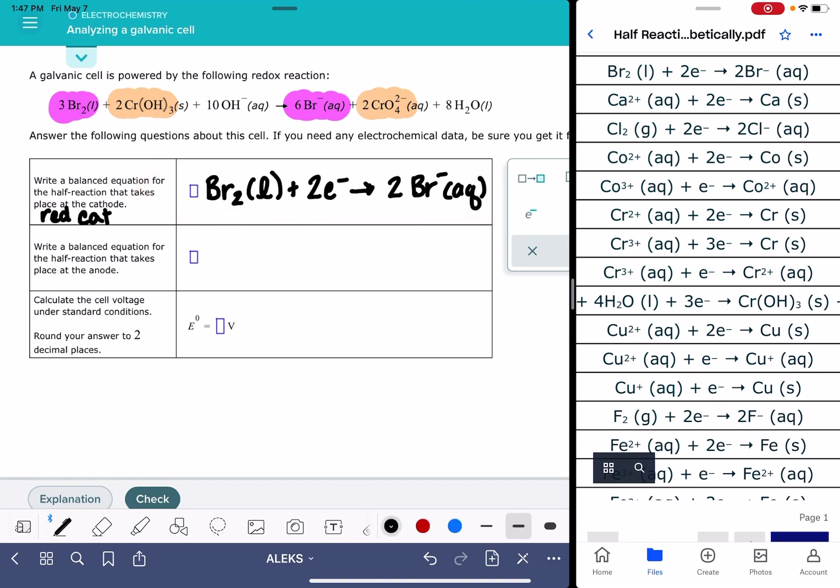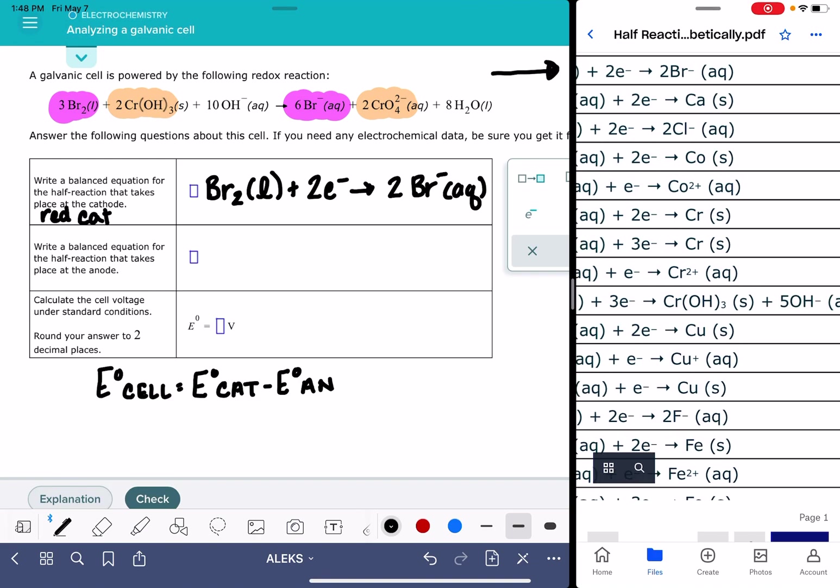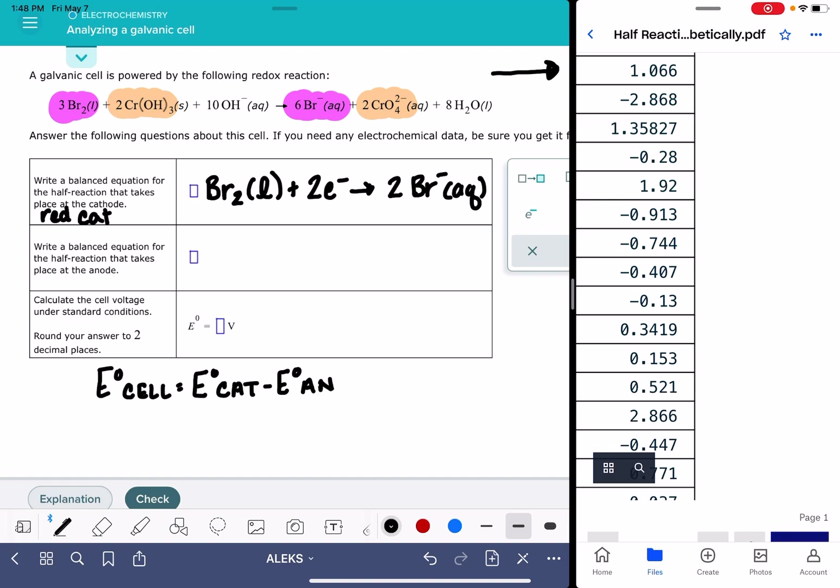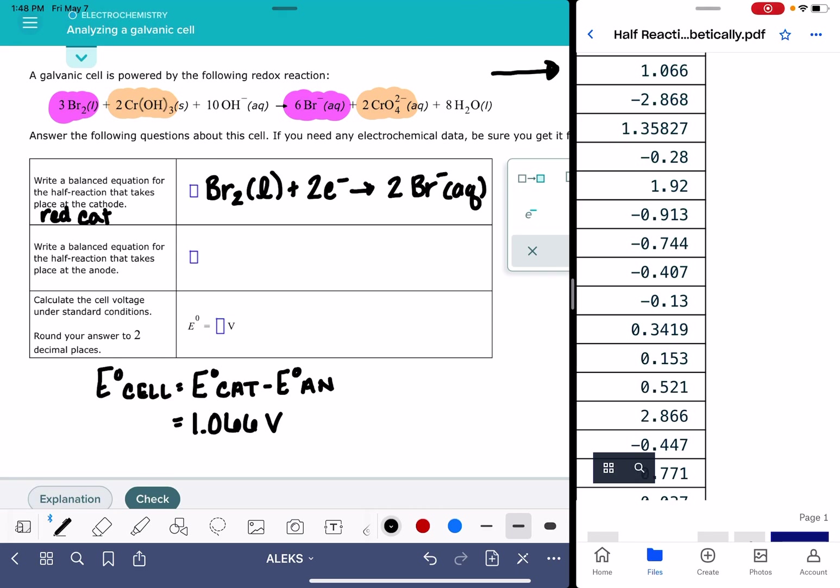Now, because I'm going to need the E cell value, because we're being asked to calculate E cell down here, I'm also, while I'm at this bromine equation, I'm going to copy the voltage so that we can simultaneously calculate our E cell. So here's our bromine reaction, and then we're going to go over here and find the voltage. It is 1.066 volts.